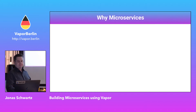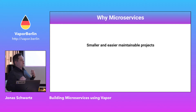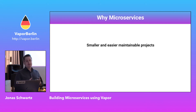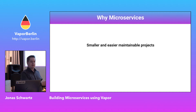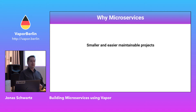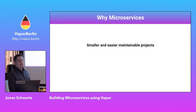Why should you use microservices? If you have a large project, you end up with a massive code base. Splitting your application into microservices gives you easier and smaller maintainable projects. You have either one or more features in a project and these projects communicate between each other, making it easier to update and maintain them. For example, when SR4 comes out, you can start with one microservice, update that, without having to update your entire code base at once.